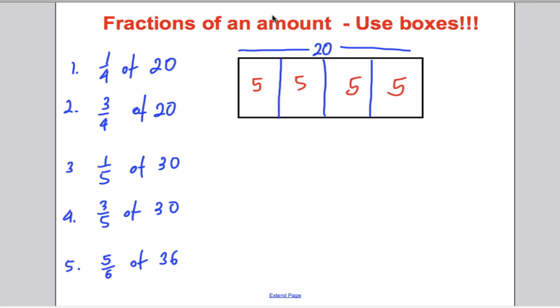Now, once you've done a box, these two answers are simple because for question one, one quarter, one of the four, must be equal to five. And for question two, three quarters of 20, well, we want three boxes here. So we could colour in three boxes and the answer must be five, 10, 15. So simple when you draw boxes.